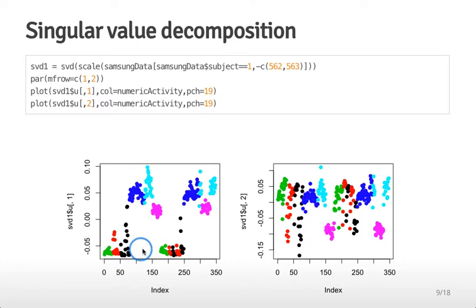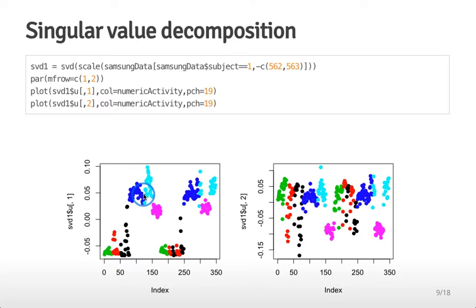The first singular vector unsurprisingly distinguishes all the sedentary activities — laying down, sitting, or standing — from activities like walking, walking up, or walking down. This singular vector actually looks quite a bit like the max acceleration vector, so it's not necessarily helpful for improving our ability to cluster differences between the active categories.